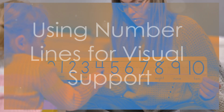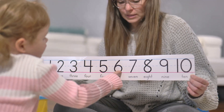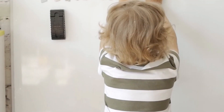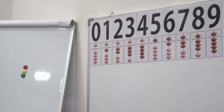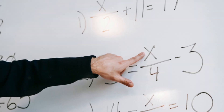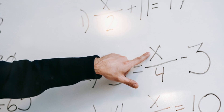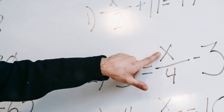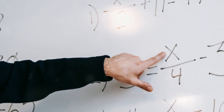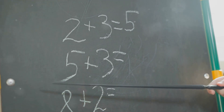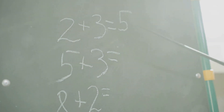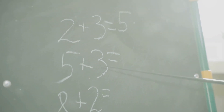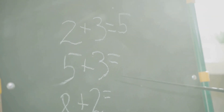Our next strategy takes us on a journey along the number line, a valuable tool for visual learners and a fantastic resource for students with autism and dyscalculia. Number lines provide a clear, linear representation of numbers and their relationships to one another. They help students visualize the concepts of addition, subtraction, multiplication, and division in a way that makes sense to them.